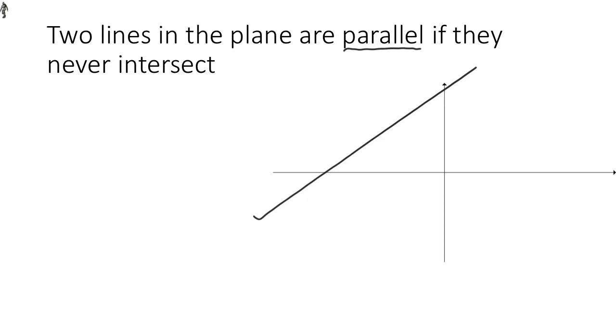On the other hand, if I draw a line that is shallower than the black line, then it's pretty clear that they would have to intersect somewhere down here. And so a shallower line can't be parallel either.